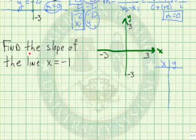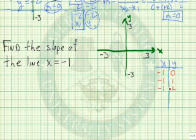Now we want to find the slope of the line x equals negative 1. In this case, if y is 0, x is negative 1. If y is 1, x is negative 1. If y is 2, x is negative 1. If y is negative 1, x is negative 1. Let's plot these four points and see what we have.